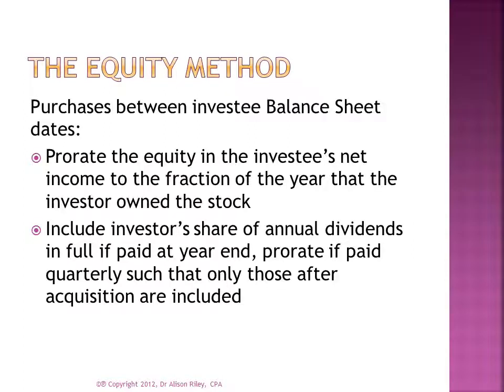Suppose the investor were to purchase shares in its investee between investee balance sheet dates. In this case, the investor would prorate the equity in the investee's net income to the fraction of the year that the investor owned the stock. The treatment of investee dividends would depend on the declaration dates of the dividends. Dividends declared before the purchase date of investee stock are ignored, while dividends declared after the purchase date are accounted for in the normal way.